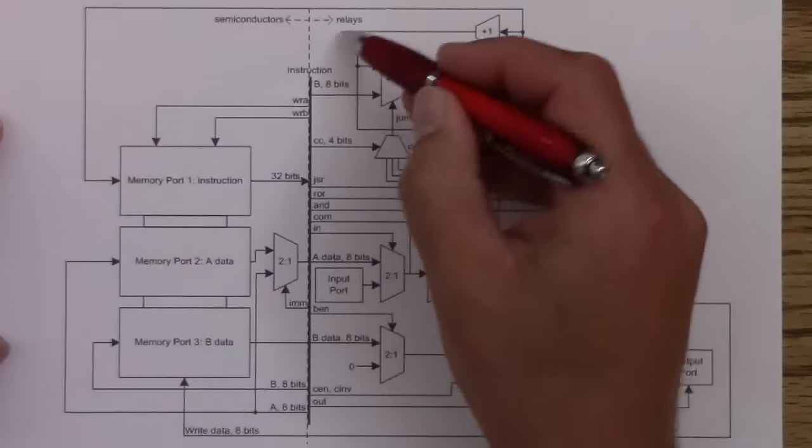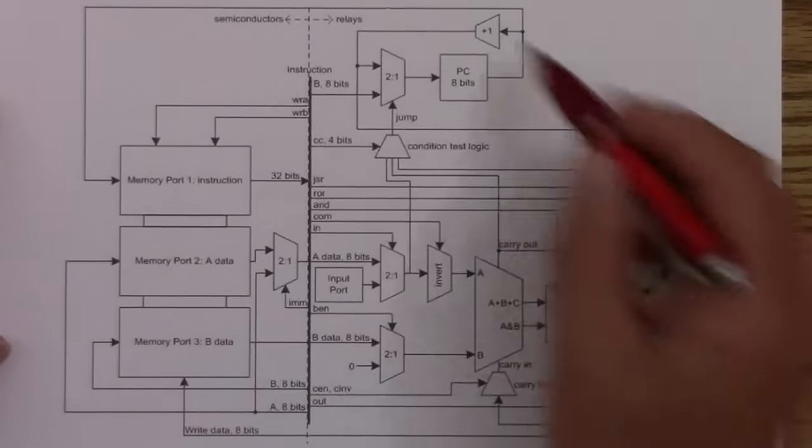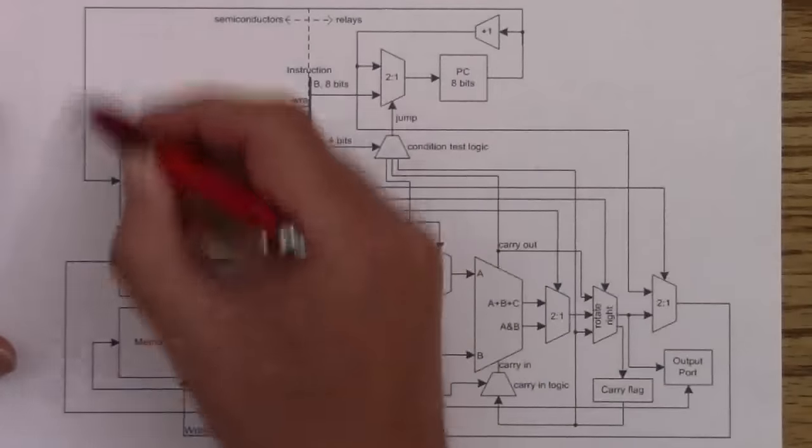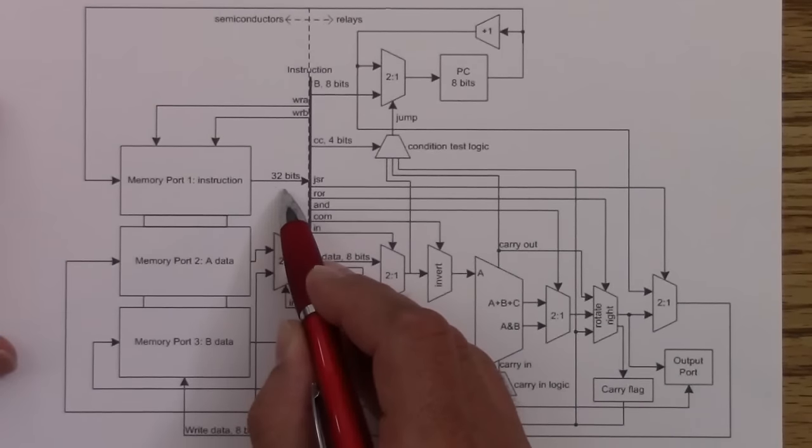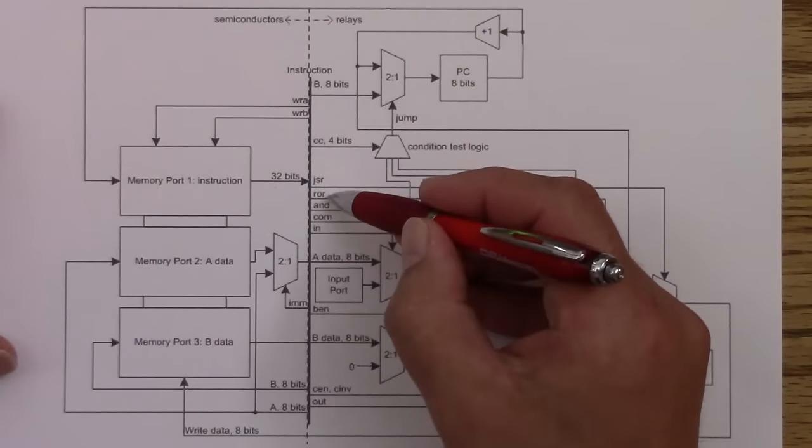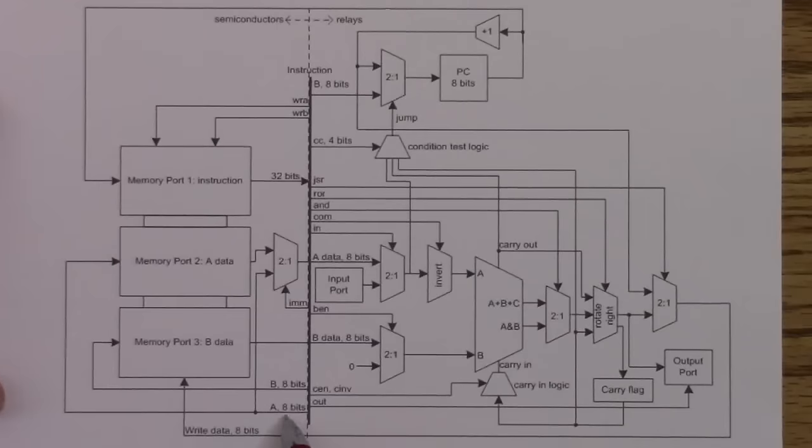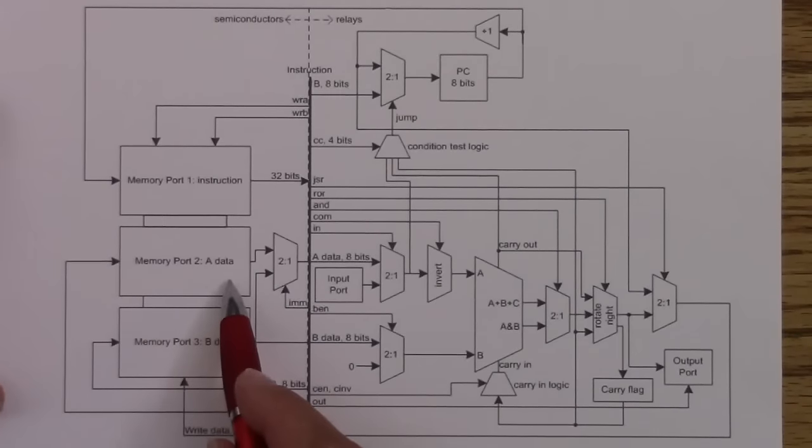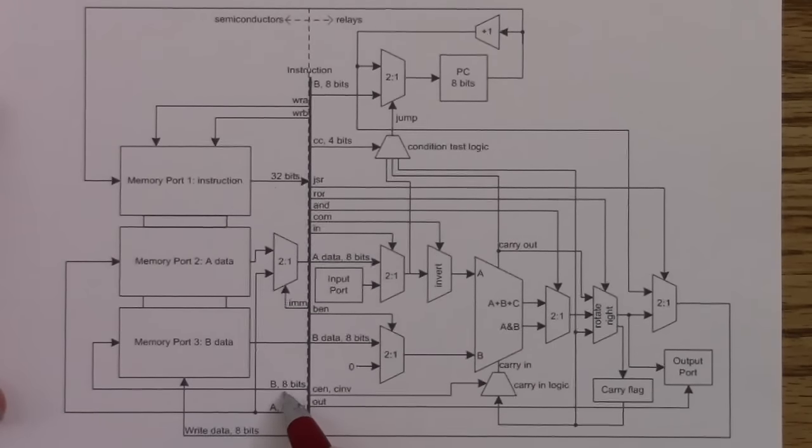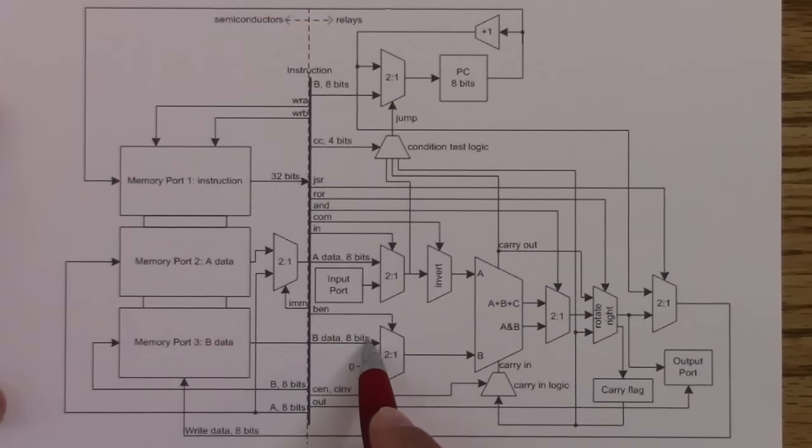So the relay computer is a single cycle per instruction computer. So in one cycle, there's a sequence that it goes through. So let's go through that sequence quickly. So the program counter goes to one of the memory ports, which reads the 32-bit instruction to execute, and that is presented on this dark line right here. So what you have is control bits that control the data flow. So what else happens with these 32-bits is the A operand is immediately connected to another memory port, which reads the A data, and the B operand field from the instruction is connected to the third port, which reads the B data. So the A data and the B data are the two inputs to the ALU.